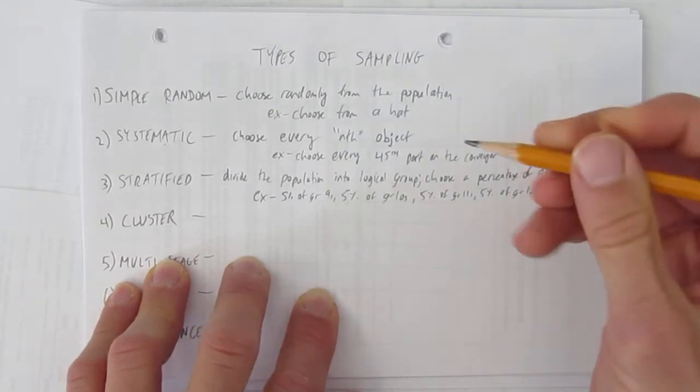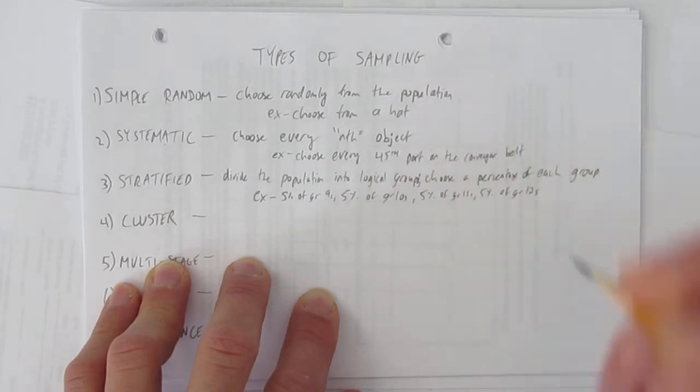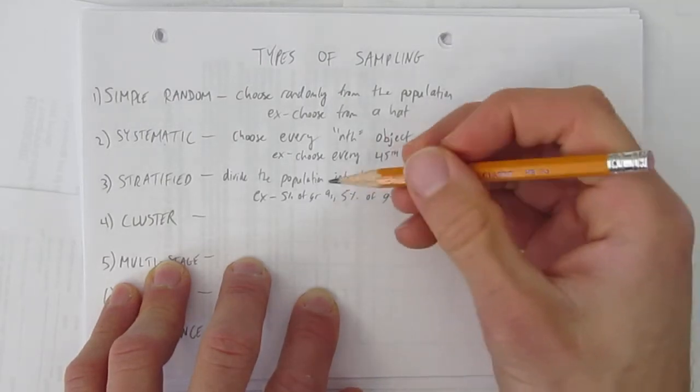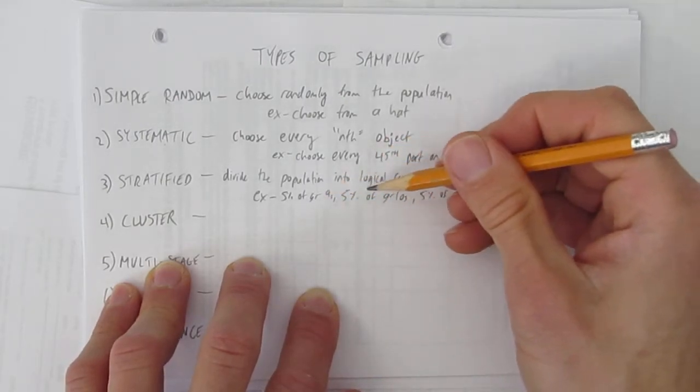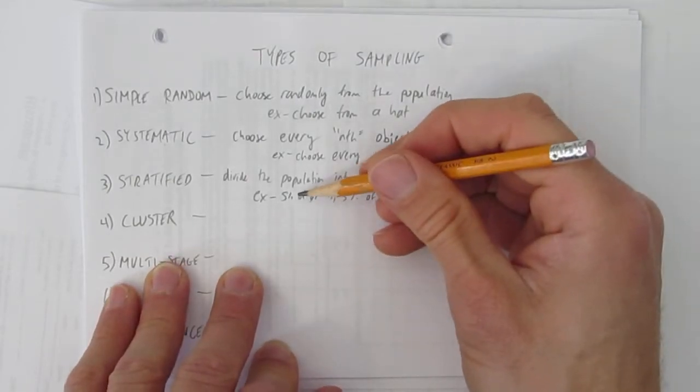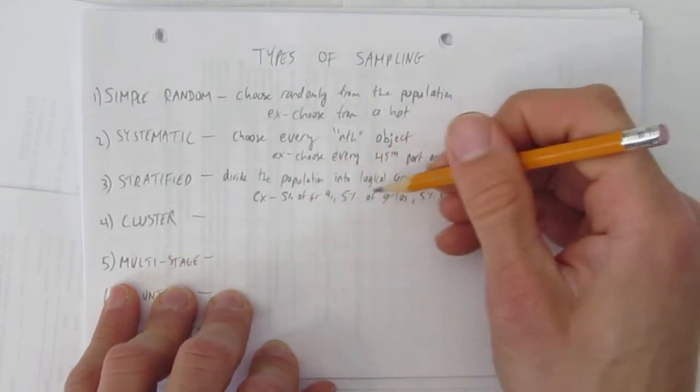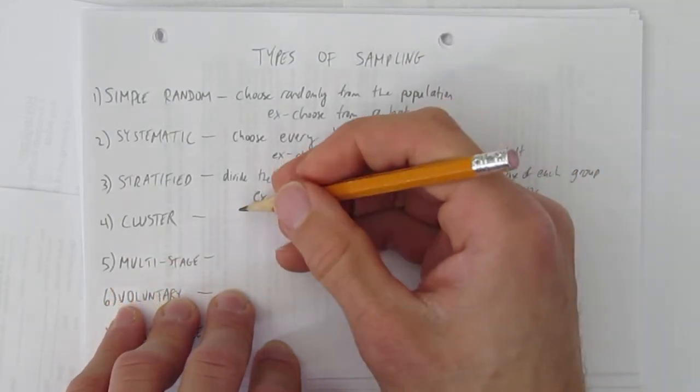And that way the population is divided into logical groups, and then those logical groups you choose five percent of each of them so as to get a fair sample, that is you get about the same distribution of grade nines, grade tens, grade elevens, and grade twelves of your whole school because you're choosing a percentage of each group.